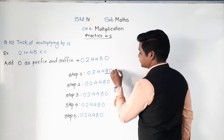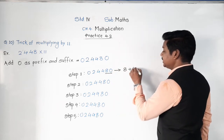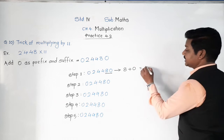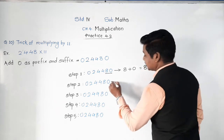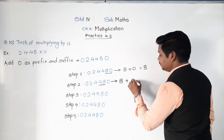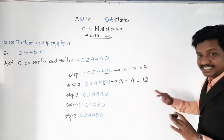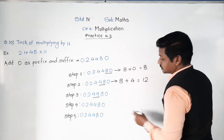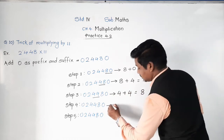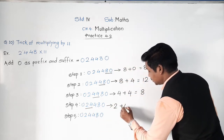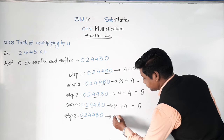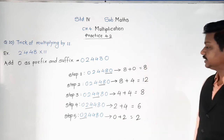First, underline the last two digits — 8 and 0 — and add them: 8 plus 0 equals 8. Next, underline 8 and 4: 8 plus 4 equals 12 — write it as it is for now. Next, 4 and 4: 4 plus 4 equals 8. Then 2 plus 4 equals 6. Then 0 plus 2 equals 2.